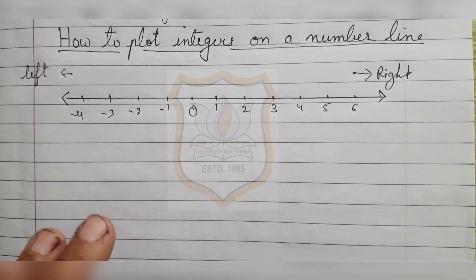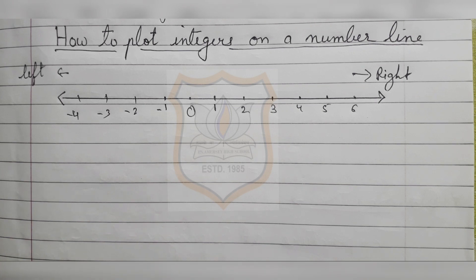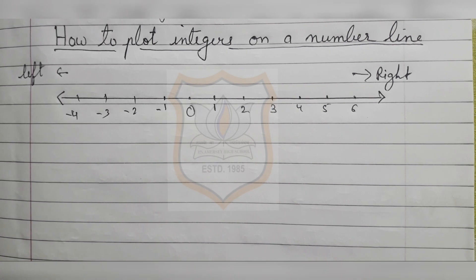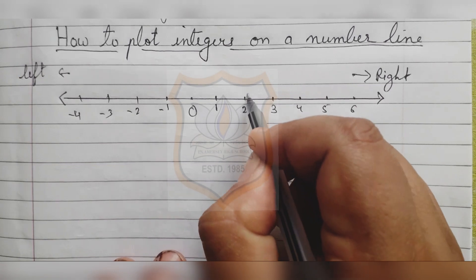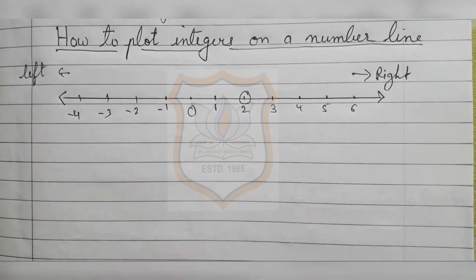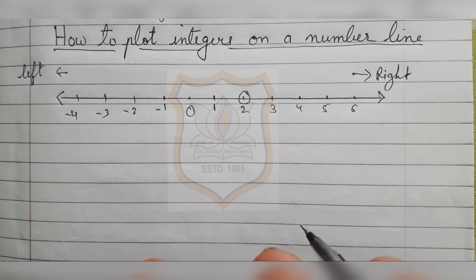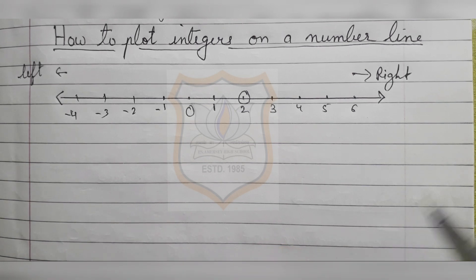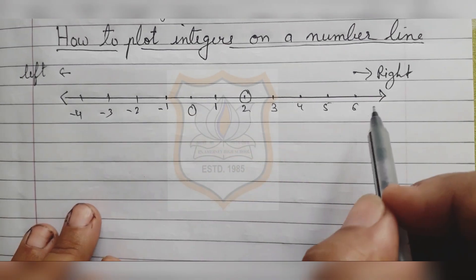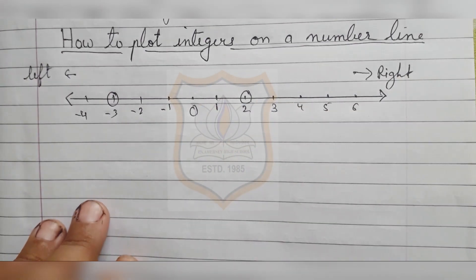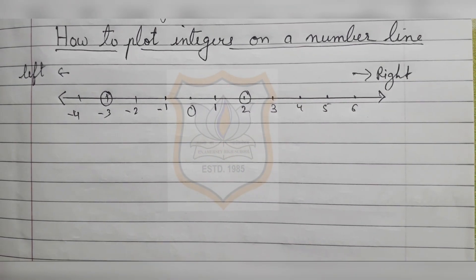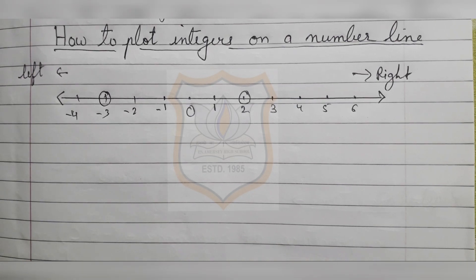In this way we plot negative numbers on the left hand side. For example, if the question asks you to plot plus two on a number line, draw a number line and put a circle around two. If asked to plot minus three on a number line, draw a number line and mark minus three on the left hand side of zero. This is how you plot negative and positive numbers on a number line.